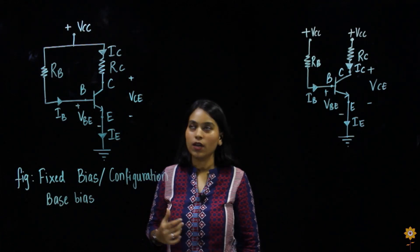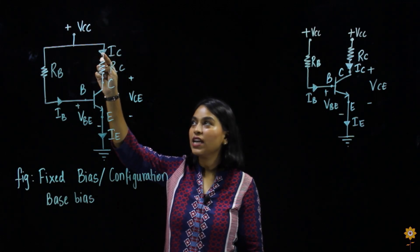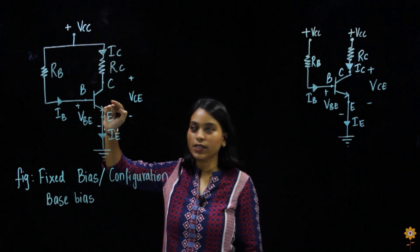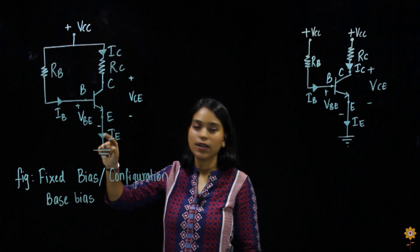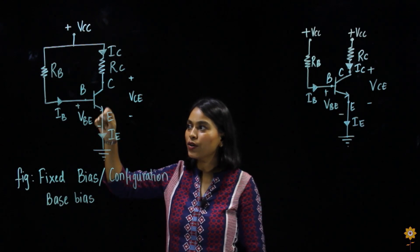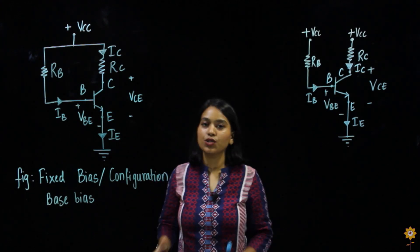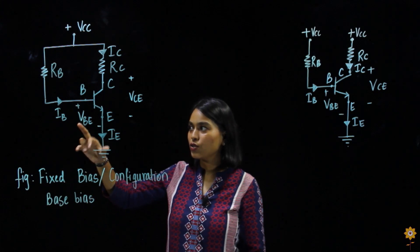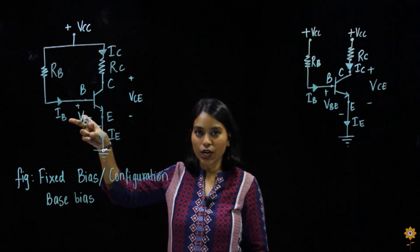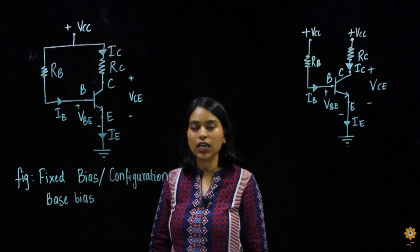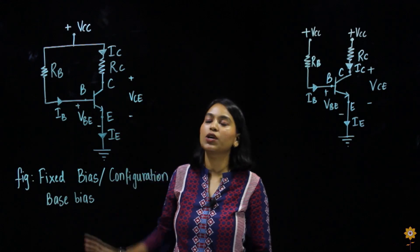Now let's look at the currents flowing. From the collector terminal, current IC is flowing inward as shown by the arrow. Current IB flows into the base terminal, also incoming. IE is the emitter current flowing outward from the emitter terminal. There are also two voltages: VBE is the input voltage across the base and emitter terminals, and VCE is the output voltage across the collector and emitter terminals.